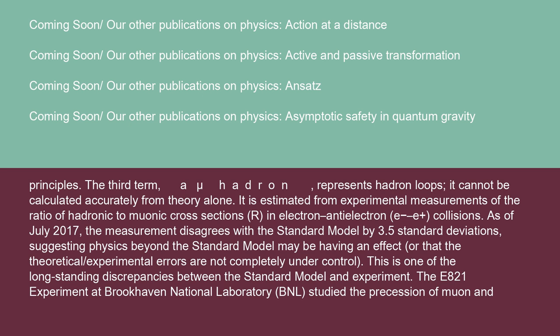As of July 2017, the measurement disagrees with the standard model by 3.5 standard deviations, suggesting physics beyond the standard model may be having an effect, or that the theoretical/experimental errors are not completely under control. This is one of the long-standing discrepancies between the standard model and experiment.